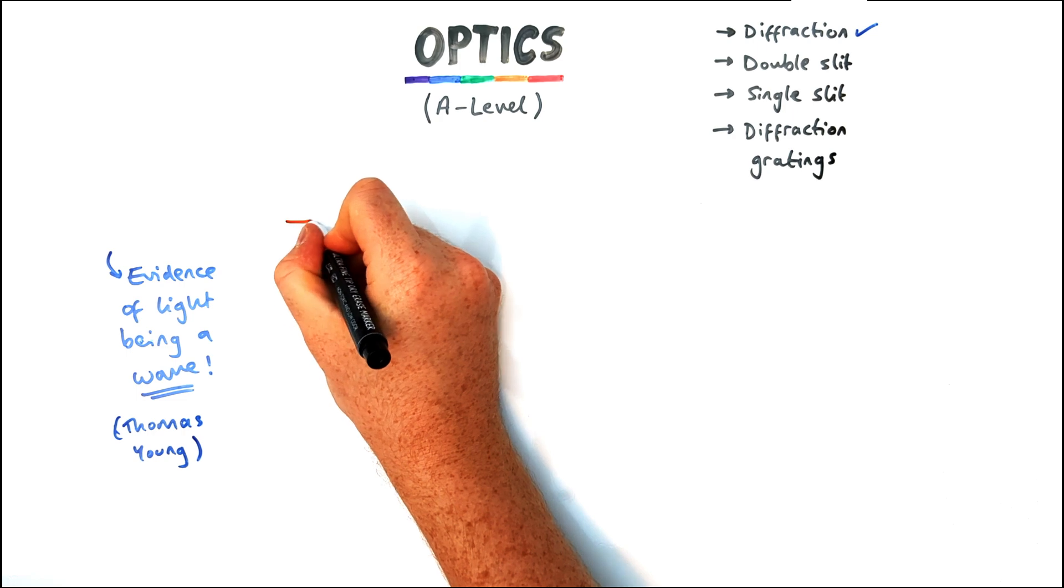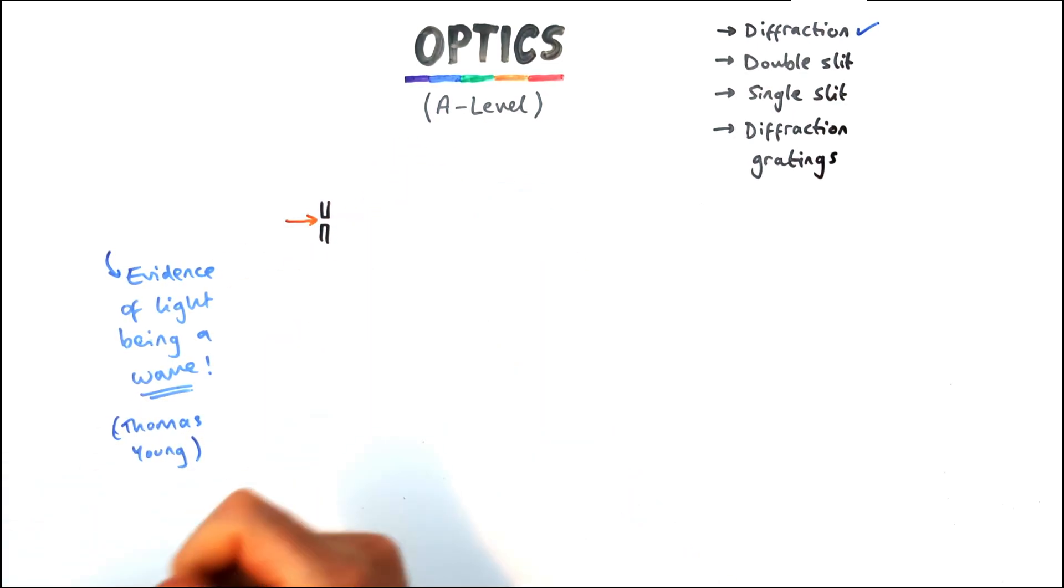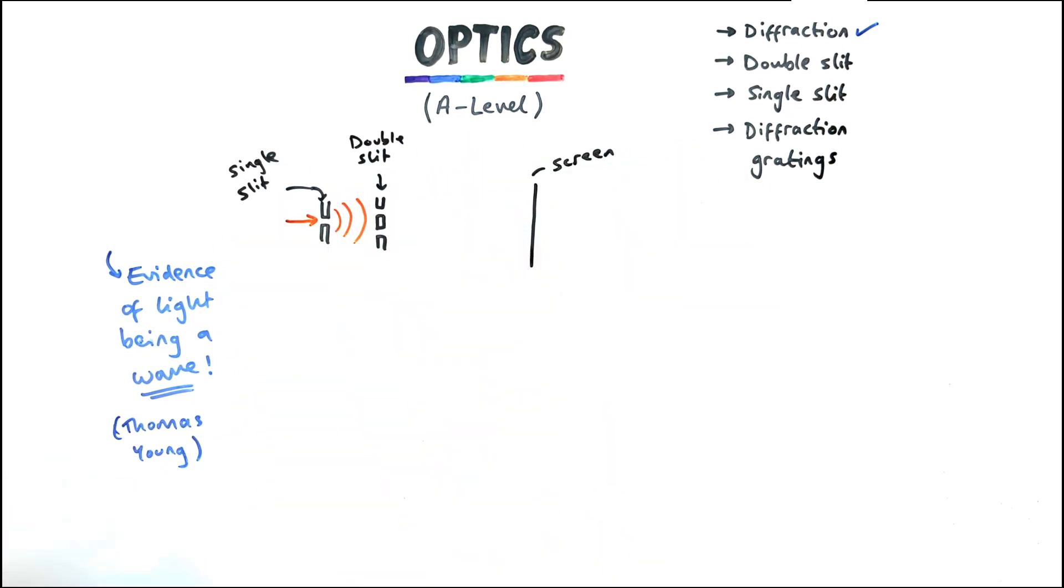So let's have a look at this idea of the double slit. So you've got a light source here which in the 1800s would have just been a lamp of some sort and it travels through a single slit then goes through a double slit then travels to a screen and there is a pattern seen on the screen.